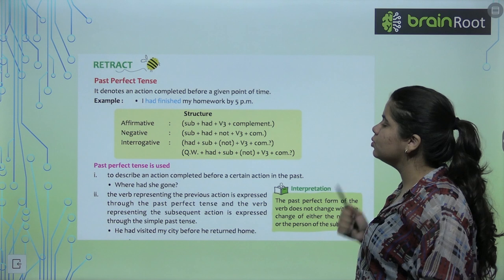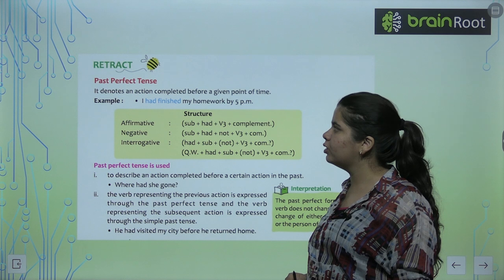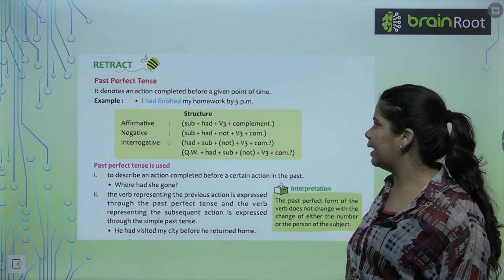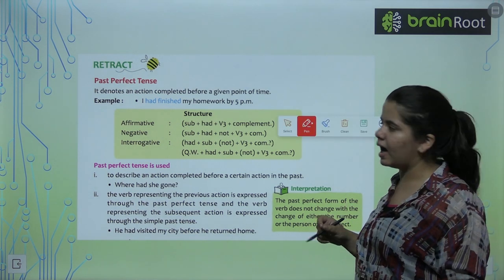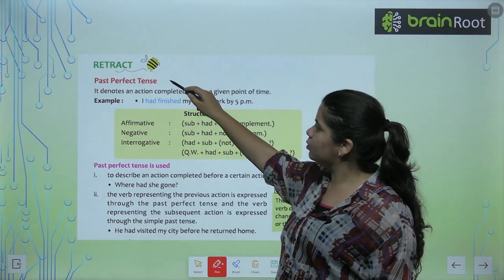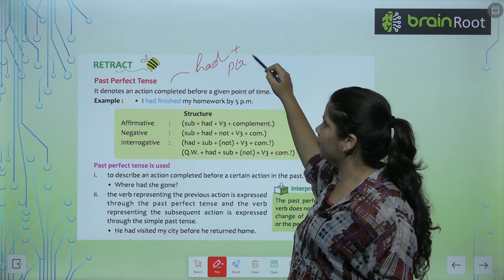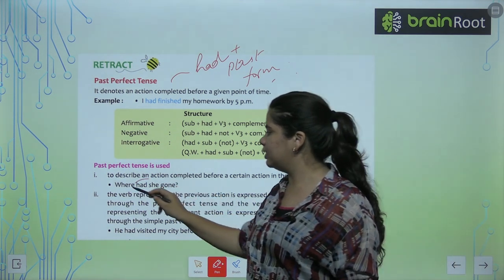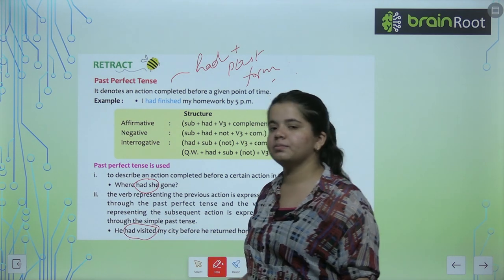Let's move on further to past perfect tense. The past perfect tense denotes an action completed before a given point of time. I have finished my work by 5 pm. Present perfect rule was has or have plus the past form. In this the rule is had plus the past form. Where had she gone? He had visited. This is past perfect.